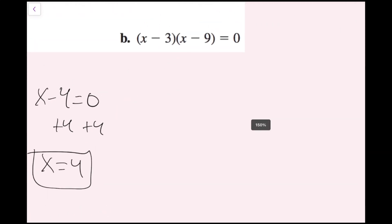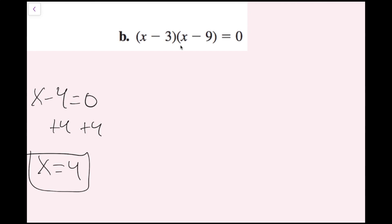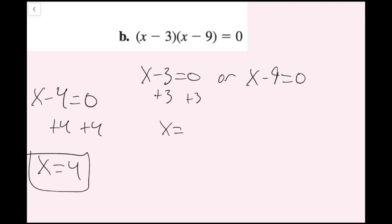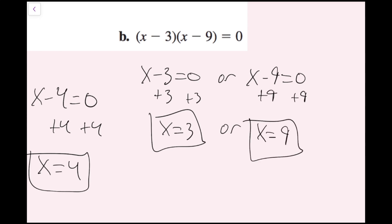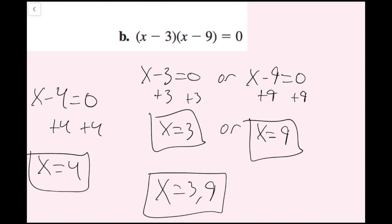For part B, I have x minus 3 times the quantity x minus 9 equals zero. This thing times this thing equals zero, so at least one of these has to be zero. I rewrite this as x minus 3 equals zero or x minus 9 equals zero. Adding 3 gives x equals 3, or adding 9 gives x equals 9. So x equals 3, 9 are my solutions.